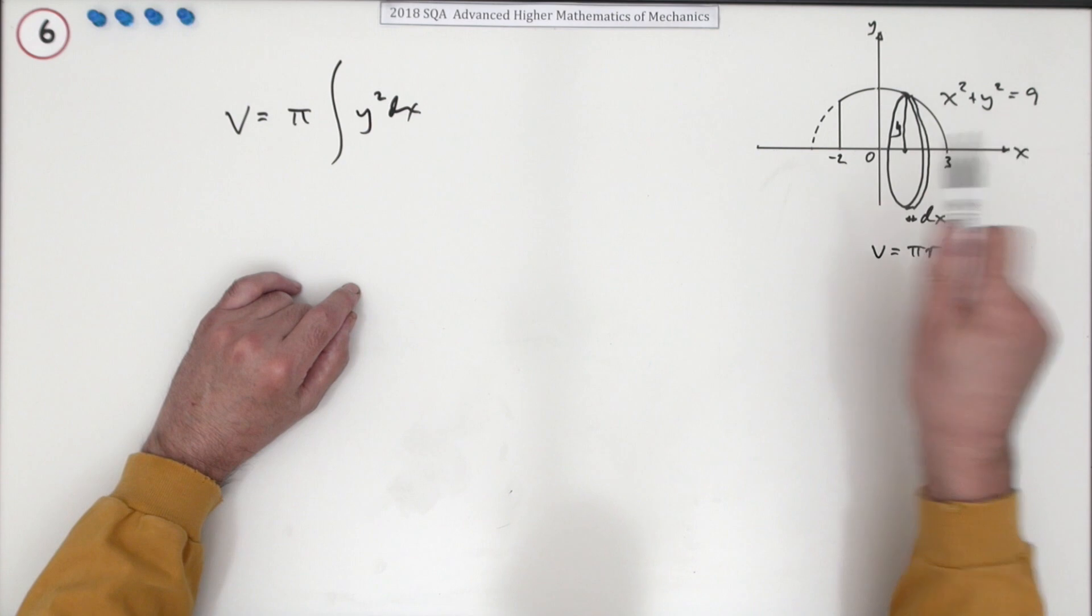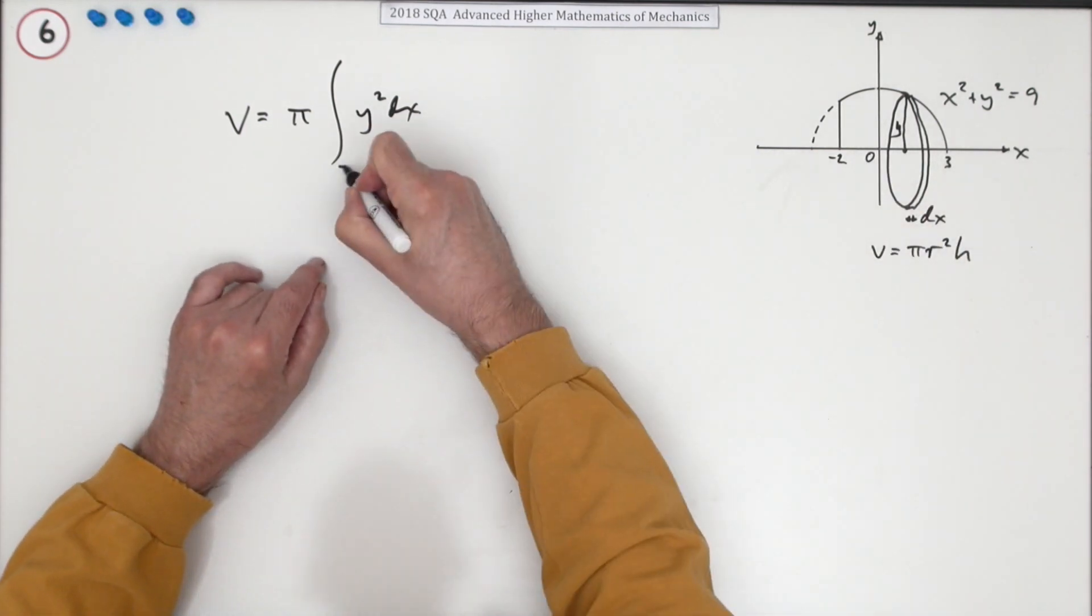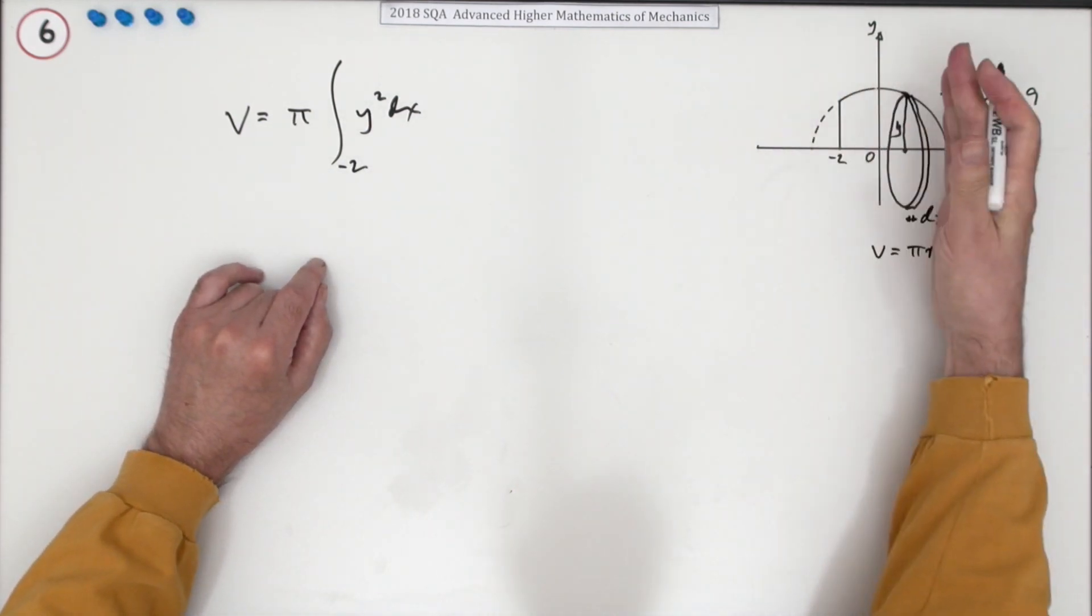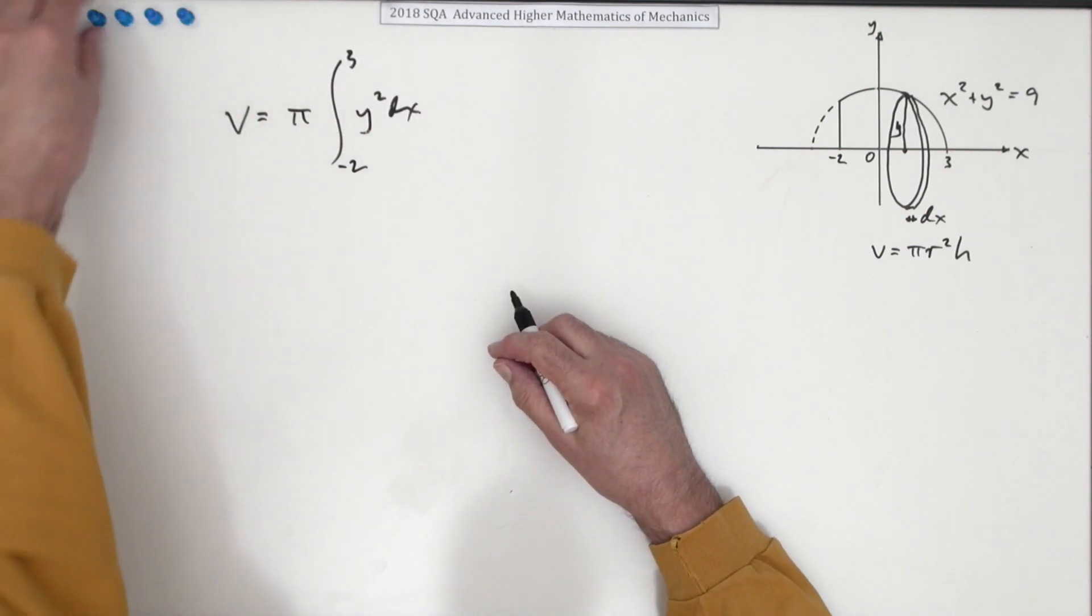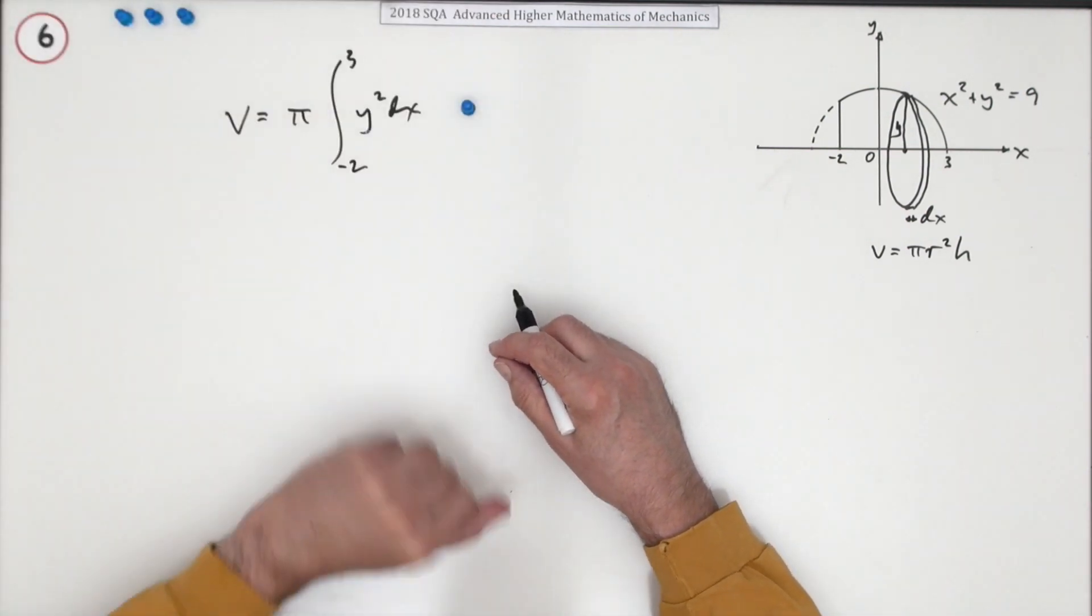And you add them all up, starting from the first one, which is at x equals negative 2, and the last one, which is at x equals 3. Now writing that down gets the first mark.